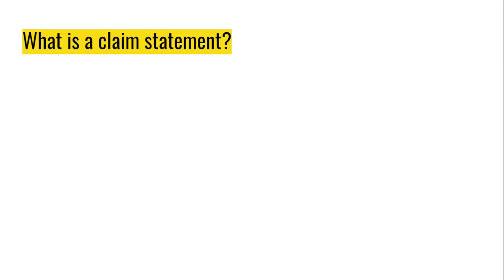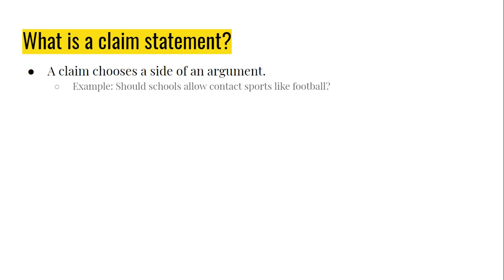However, it's important to know what a claim statement is. It's not enough to just take a side — with a claim comes a claim statement. A claim chooses a side of an argument. For example, should schools allow contact sports like football? Some of you probably think of course they should allow sports. Others of you might think no way because of injuries. One example of a claim statement for this question would be: schools should allow contact sports. Notice we're taking a side about whether they should or should not allow something.